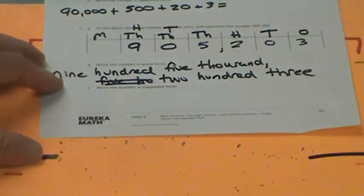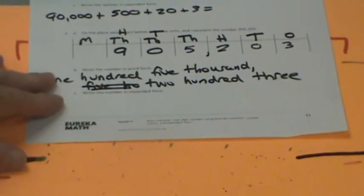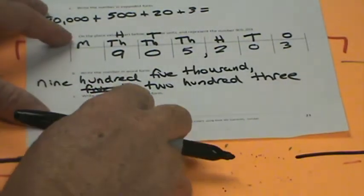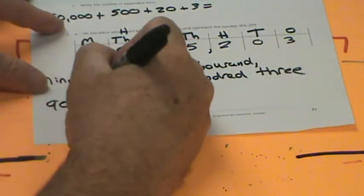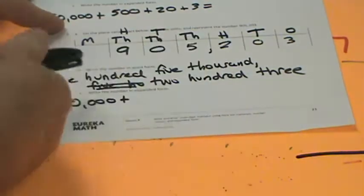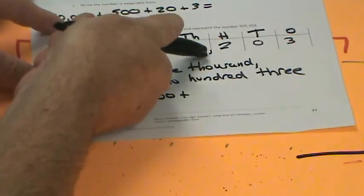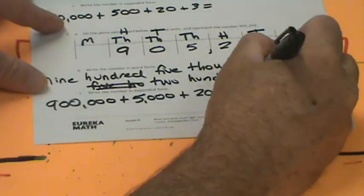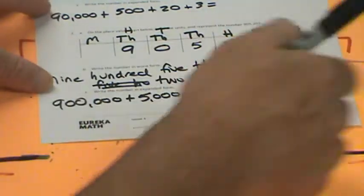Write the number in expanded form. Starting with hundred thousands: 900,000 plus 5,000 plus 200 plus 0 tens plus 3 ones. So there we have it: 905,203. Beautiful.